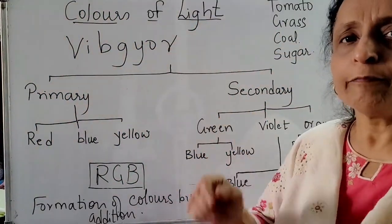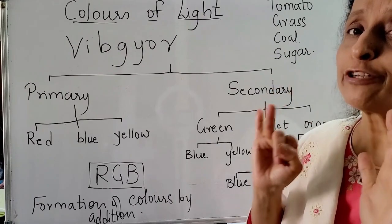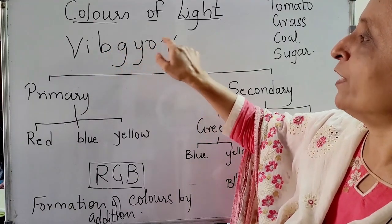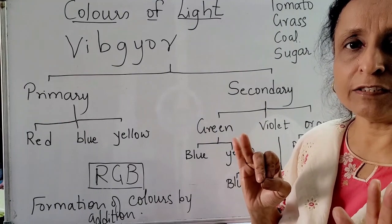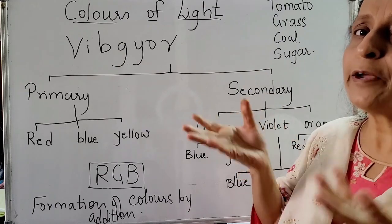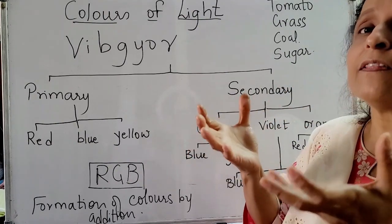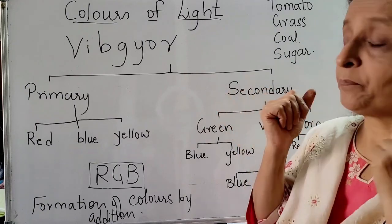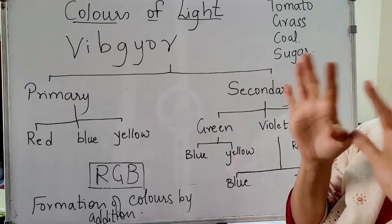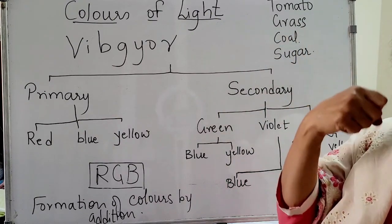The colors of light: Sunlight appears white, but it is a combination of seven colors. Those seven colors are violet, indigo, blue, green, yellow, orange, and red. Whenever you observe an object, if it seems red, it absorbs the rest of the colors and reflects red. If you see green, it absorbs the rest and reflects green. For example, a tomato absorbs all colors except red, so it reflects red. Grass is green — it absorbs all other colors and reflects green.